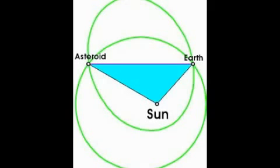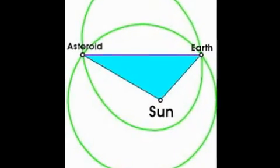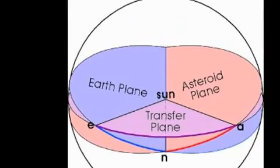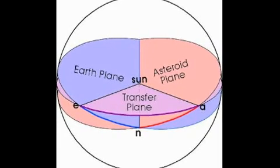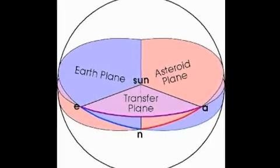These three points determine the plane of the transfer orbit. Besides the transfer orbit's plane, there is also the Earth's plane and the asteroid's plane. These three planes pass through the Sun. They will cut a Sun-centered sphere along three great circles.